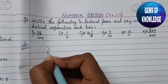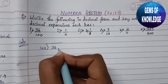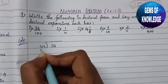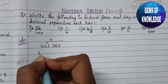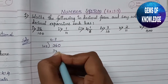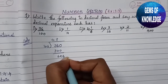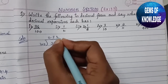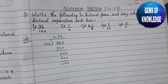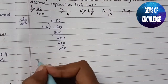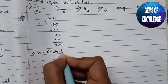The first question is 36 divided by 100. So 36 will be inside and 100 will be outside. Since 36 is smaller than 100, we put a zero with a decimal point. 100 times 3 is 300, then after subtracting you are left with 60. Put one more zero to get 600. 100 times 6 is 600, remainder is 0. So the answer is 0.36, and the decimal expansion is terminating.